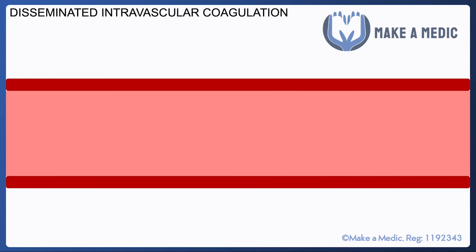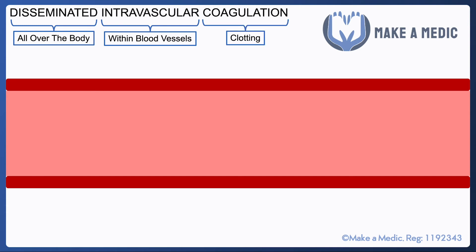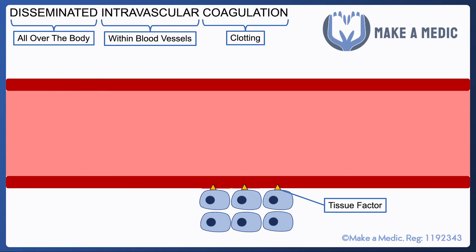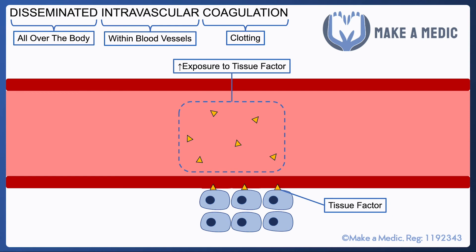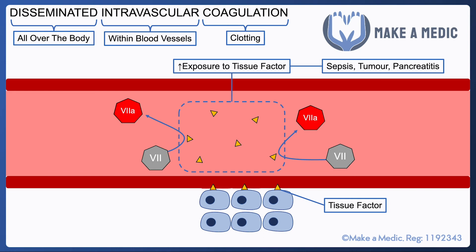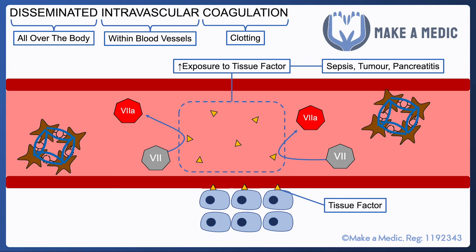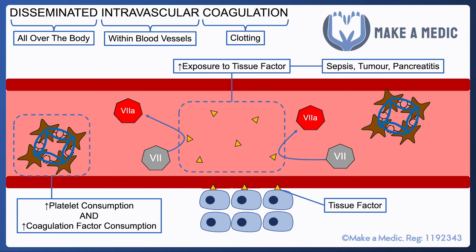Finally, DIC — disseminated intravascular coagulation. Disseminated suggests it's all over the body, intravascular means it's within the blood vessels, and coagulation means it's something to do with clotting. Remember that tissue factor is present in the tissues just outside our blood vessels. DIC is primarily caused by something that leads to increased exposure to tissue factor — causes include sepsis, tumours, or pancreatitis. All of our factor 7 gets rapidly activated to factor 7a, triggering the coagulation cascade and resulting in the formation of lots of little clots all over the body, with fibrin being formed.